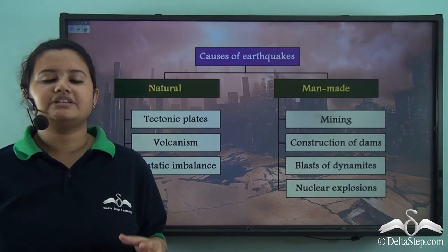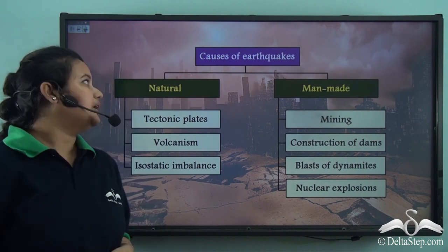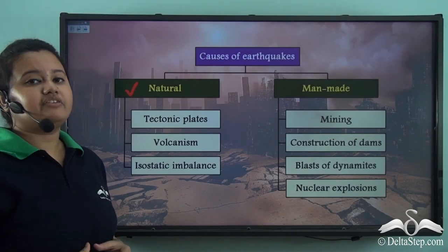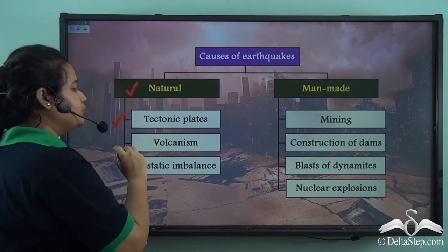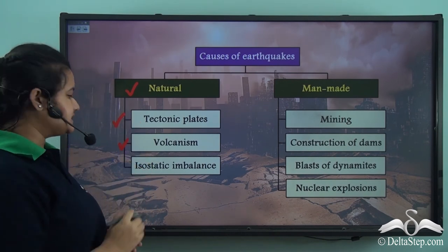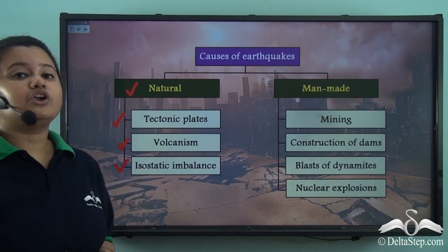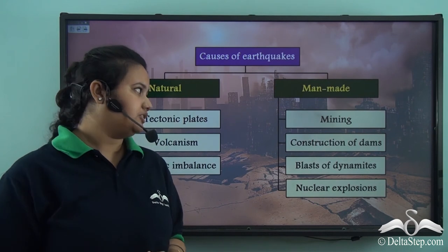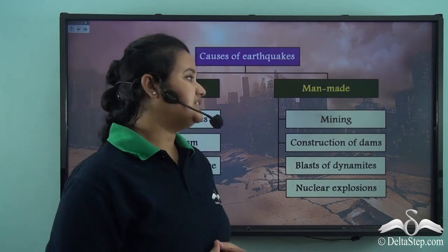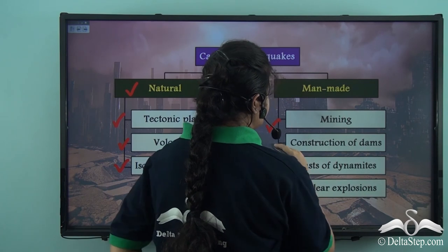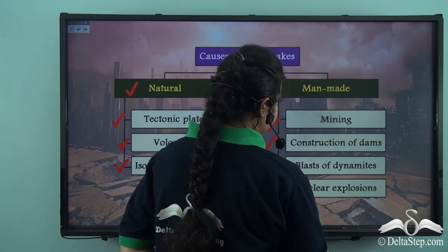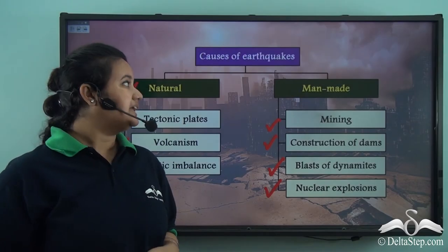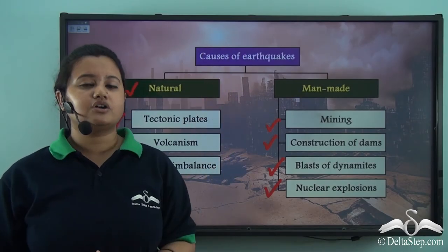In today's video, we studied about the natural factors that cause earthquake: movement of tectonic plates, volcanism, and isostatic imbalance. We also read about the man-made factors that trigger earthquakes: mining, construction of dams, blast of dynamites, and nuclear explosion. In short, these are the factors that cause earthquake.